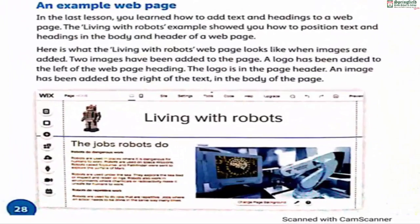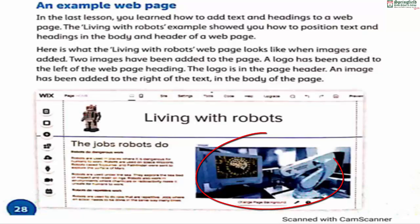In the last lesson you learned how to add text and headings to a web page. The 'Living with Robots' example showed you how to position text and headings in the body and header of a web page. Here is what the Living with Robots web page looks like when images are added. Two images have been added: a logo on the left in the page header, and an image to the right of the text in the body.